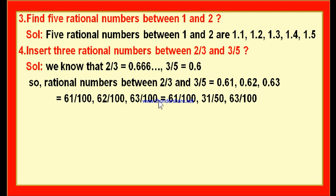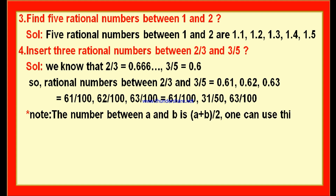61 by 100 is already in simplest form. For 62 by 100, cancel 2 from numerator and denominator to get 31 by 50. 63 by 100 stays as it is. So the three rational numbers between 2 by 3 and 3 by 5 are 61 by 100, 31 by 50, and 63 by 100. Writing 0.61, 0.62, 0.63 is also a correct answer. The formula (A + B) by 2 can also be used but it requires LCM and is more time-consuming.